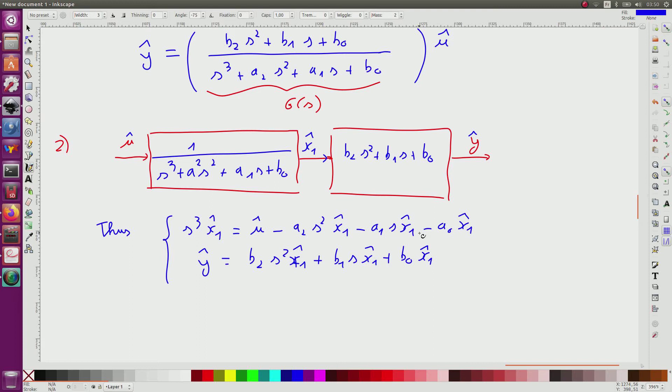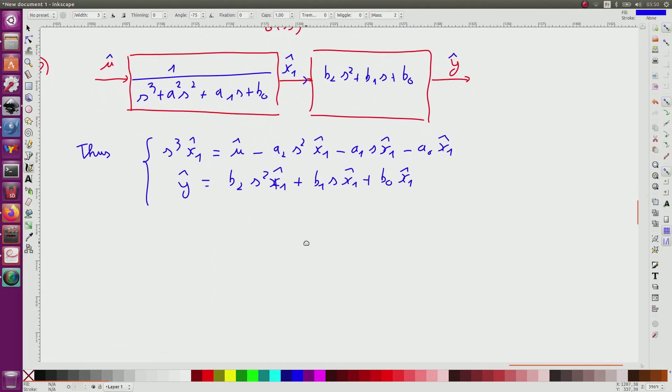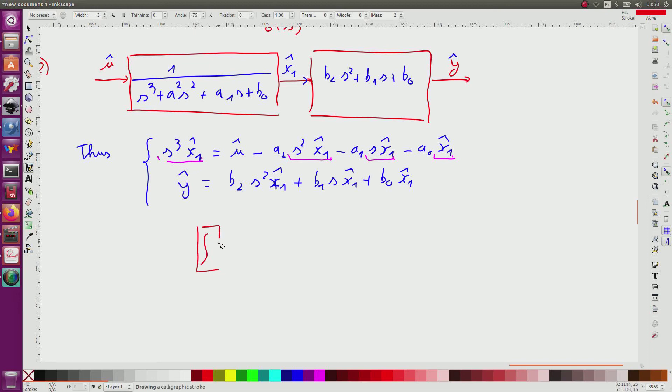First I can see that in this equation I need the different quantities. I need this quantity, this quantity, this quantity, and this one. So these quantities can be considered as signals, so I will build them. I have an integrator followed by another integrator, another integrator.